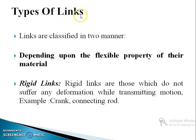Now, what are the types of links? Links are classified in two manner. One, depending upon the flexible property of their material that is rigid link. Rigid links are those which do not suffer any deformation while transmitting motion. Practically, this kind of link is not possible because always there will be some kind of deformation but this can be neglected. So, the examples of rigid links are crank and connecting rod.